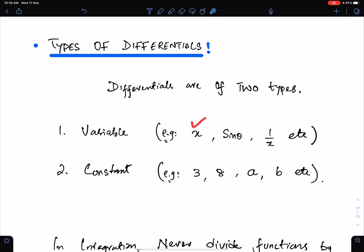Variable means, for example, x, sin theta, 1/x. Constant means, for example, 3, 8, a, b, etc.